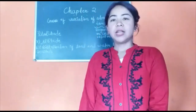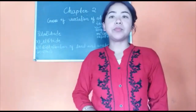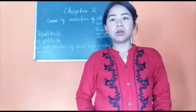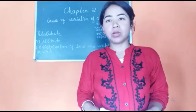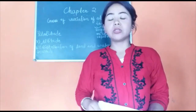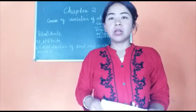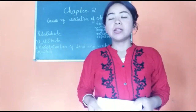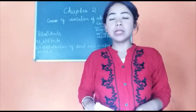Hello and welcome to our channel. In today's class we are going to learn about causes of variation of atmospheric temperature. Temperature defines the degree of hotness or coldness of an object or of an environment. Some objects are very cold, some are very hot or some are warm. So that degree of hotness or coldness is known as its temperature. The atmosphere also has a certain degree of hotness and coldness which is referred to as its temperature.